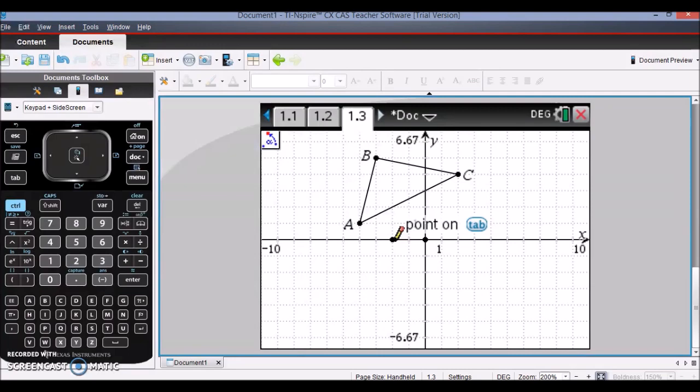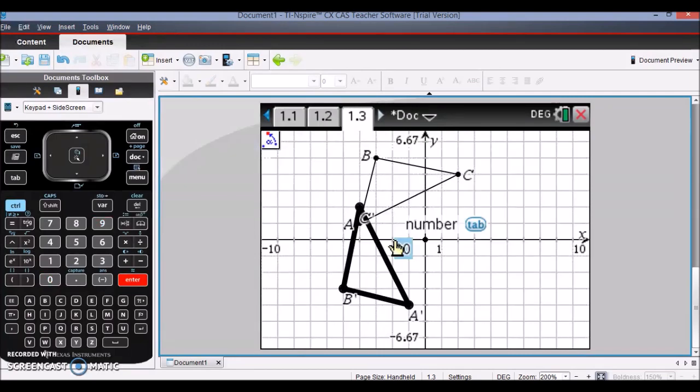By default, this will be degrees in a counterclockwise direction. So if I type in 90, my shape has then been rotated 90 degrees counterclockwise.